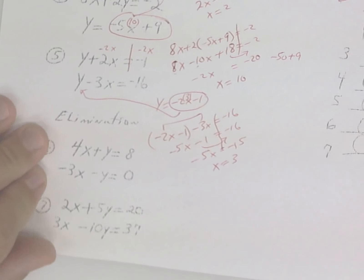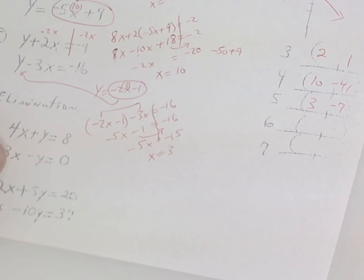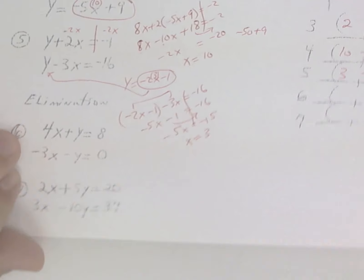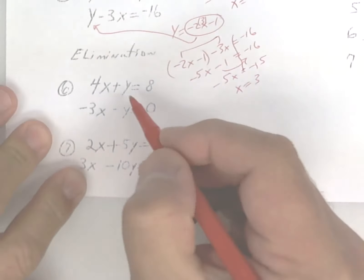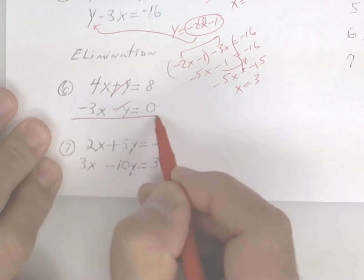Elimination. To do elimination, what you're going to do is line them up. Well, these already cancel out, so you get x is equal to 8.